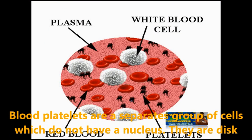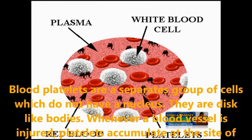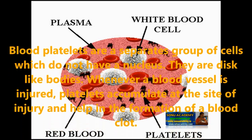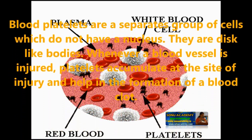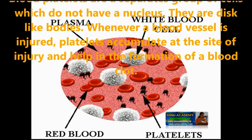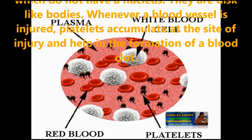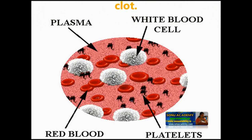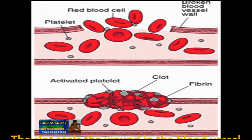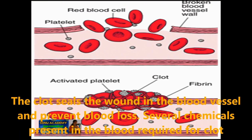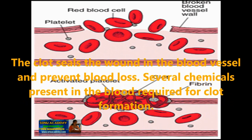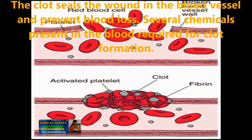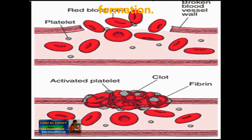Blood platelets are a separate group of cells which do not have a nucleus. They are thick disc-like bodies. Whenever a blood vessel is injured, platelets accumulate at the site of injury and help in the formation of a blood clot. The clot seals the wound in the blood vessel and prevents blood loss. Several chemicals present in the blood are required for blood clot formation.